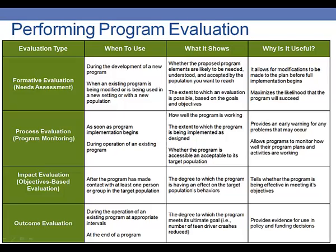An impact evaluation happens after the program has made contact with at least one person and tells us the degree to which the program is having an effect on the target population's behaviors, so we know whether it's being effective in meeting the measurable and specific objectives we've set. An outcome evaluation happens during the operation of the program at a predetermined interval of time and/or at the end of the program. This tells us ultimately the degree to which we're meeting our program goals and provides evidence we can use in policy and funding decisions.